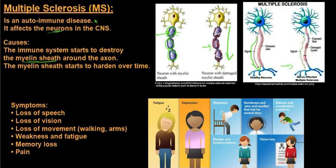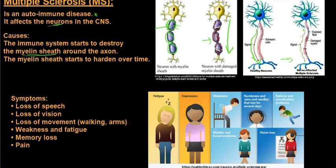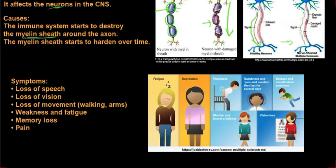With a normal myelin sheath there is a very quick transfer through the axon, but the myelin sheath will become hardened over time. The symptoms of multiple sclerosis include loss of speech, then loss of vision. Most common is probably loss of movement — loss of function of the arms and legs, or movement becoming very strained. There is also weakness and fatigue, constant tiredness, memory loss, quite severe pain, and pins and needles in the appendages.